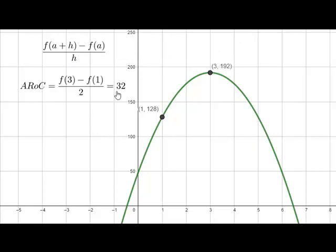So right now we have an average rate of change of 32. So let's add our secant line to our drawing. The secant line, again, goes through two points.